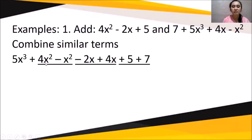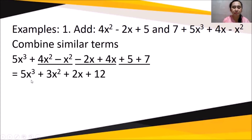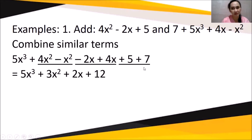Combining similar terms: 5x³ stays. For x²: 4x² - x² = 3x². For x: -2x + 4x = +2x. For constants: 5 + 7 = 12. So the sum of the two algebraic expressions is 5x³ + 3x² + 2x + 12.